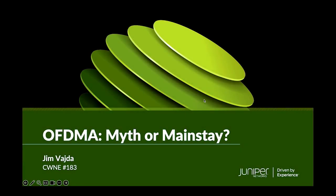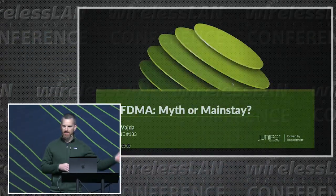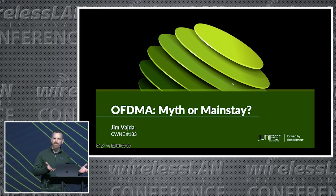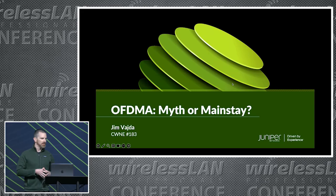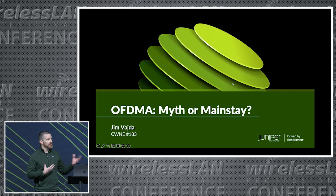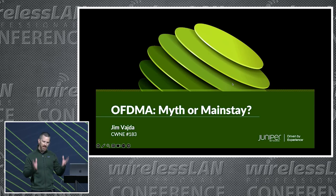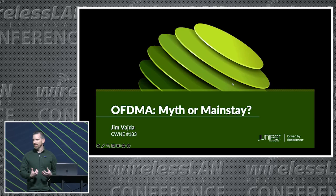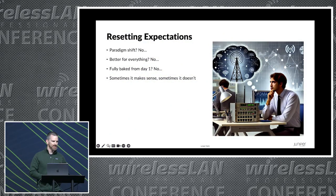My name is Jim with Juniper and I got really interested in testing OFDMA after seeing what Peter McKenzie did at WLC Prague last year and here in previous conferences. But I wanted to do it differently. There are a lot of different ways we can run tests against OFDMA. I was curious about downlink performance and if we try to give OFDMA the conditions we're told it's supposed to be good at, what will that look like? So that's what I tried to lab up and test.